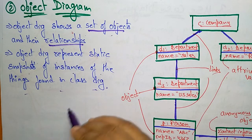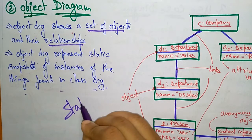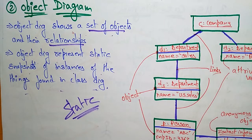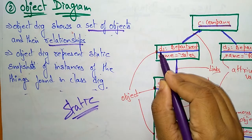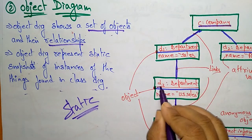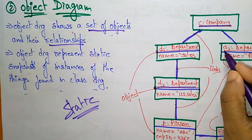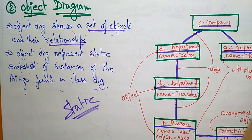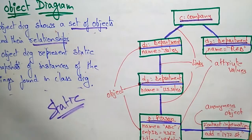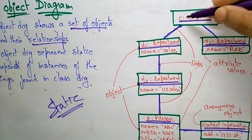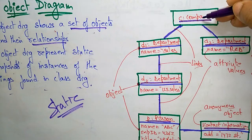The object diagram represents a static snapshot of instances of the things found in a class diagram. It is also a static structure, just like a class diagram. Objects are represented with an underlined name — wherever you see a class name with an object name, it should be underlined to represent the object.